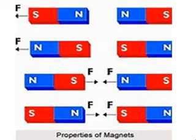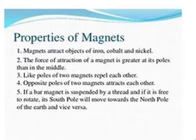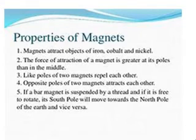These are the properties of magnets: magnets attract iron objects; the force of attraction is greater at the poles than in the middle; like poles of two magnets repel each other; and opposite poles attract each other.